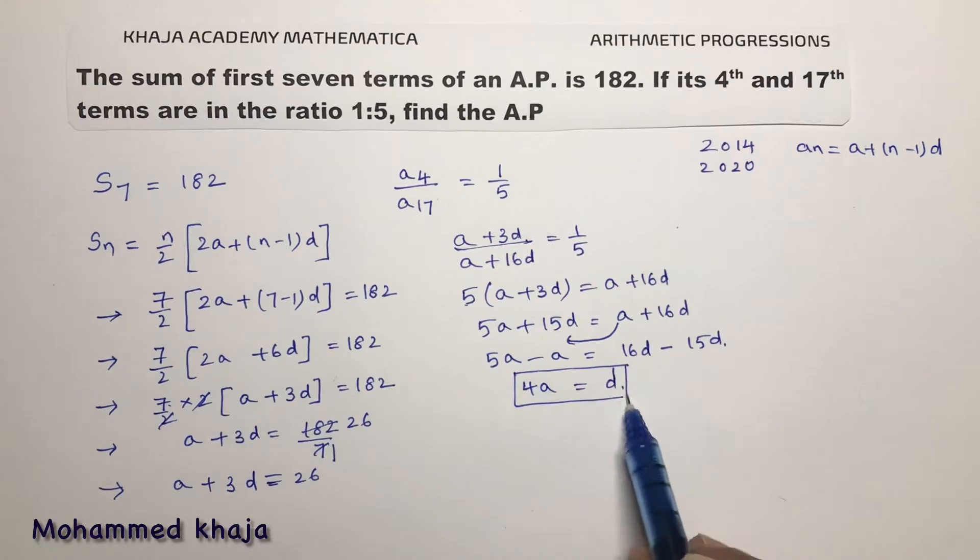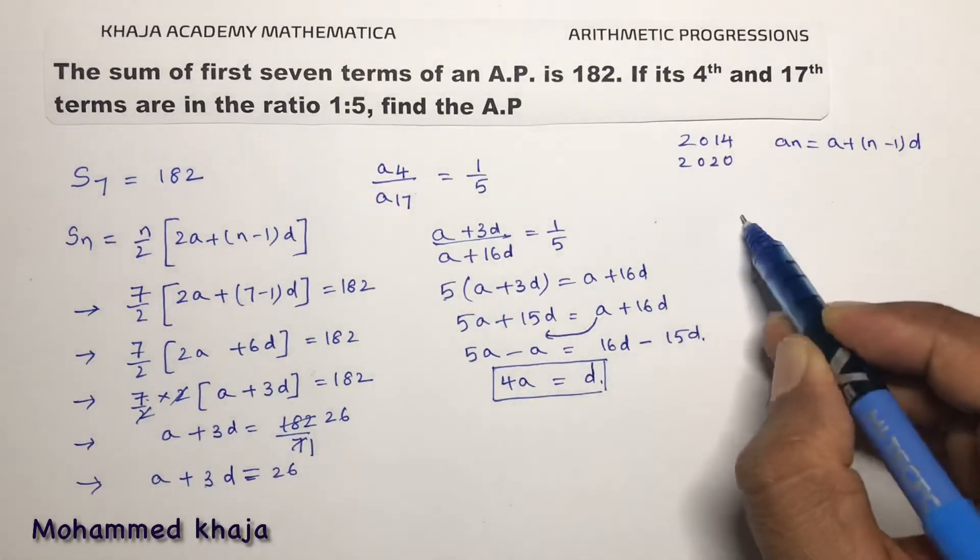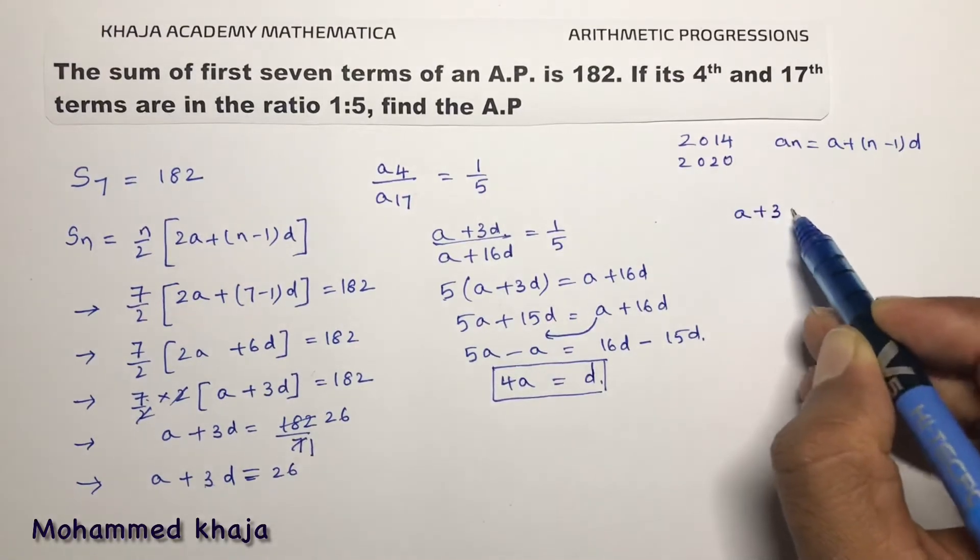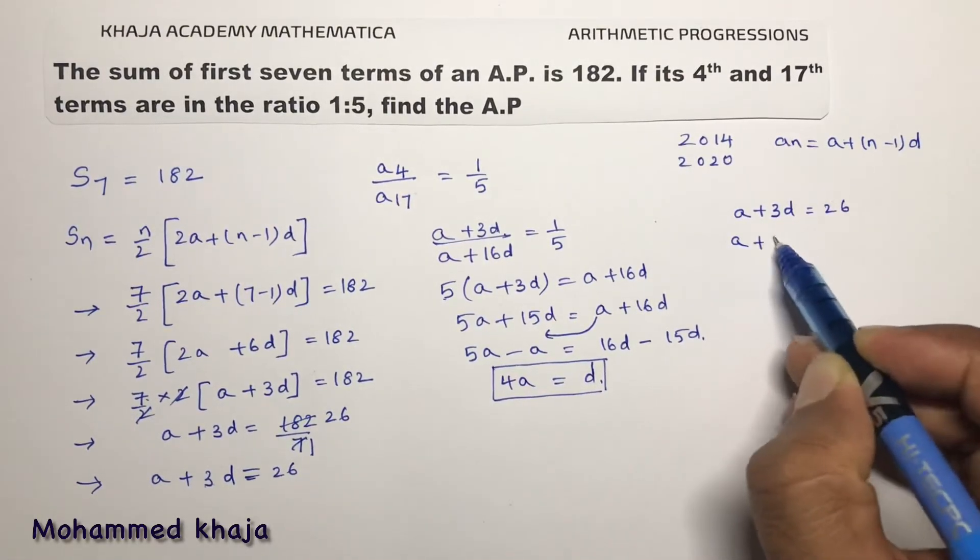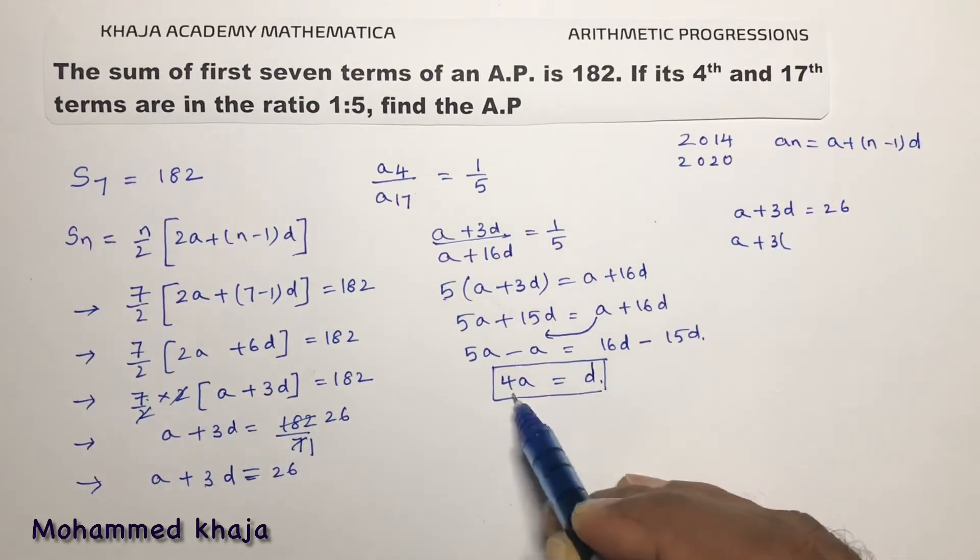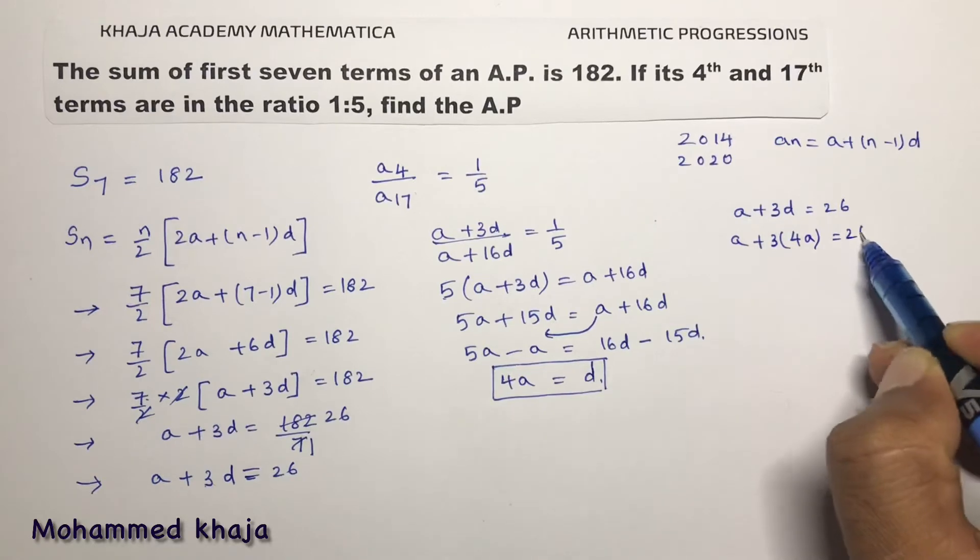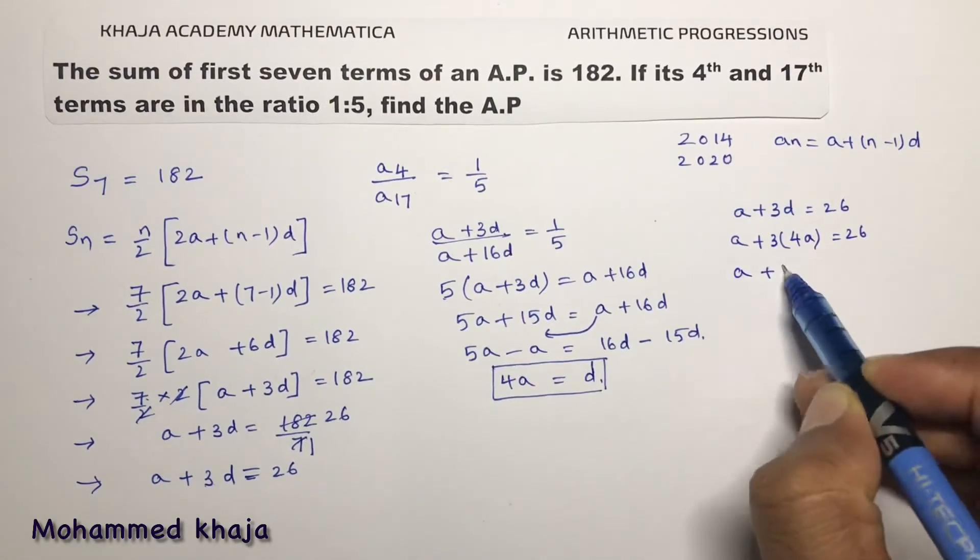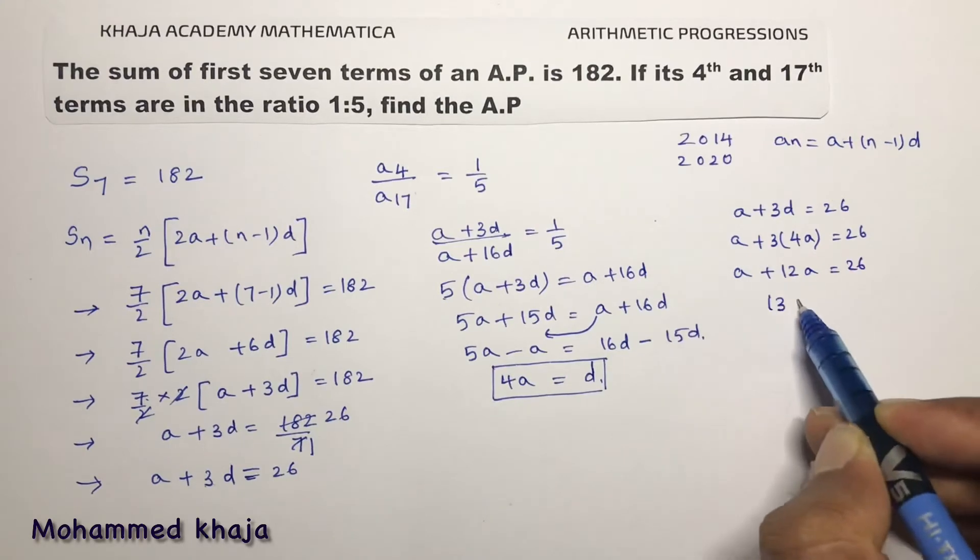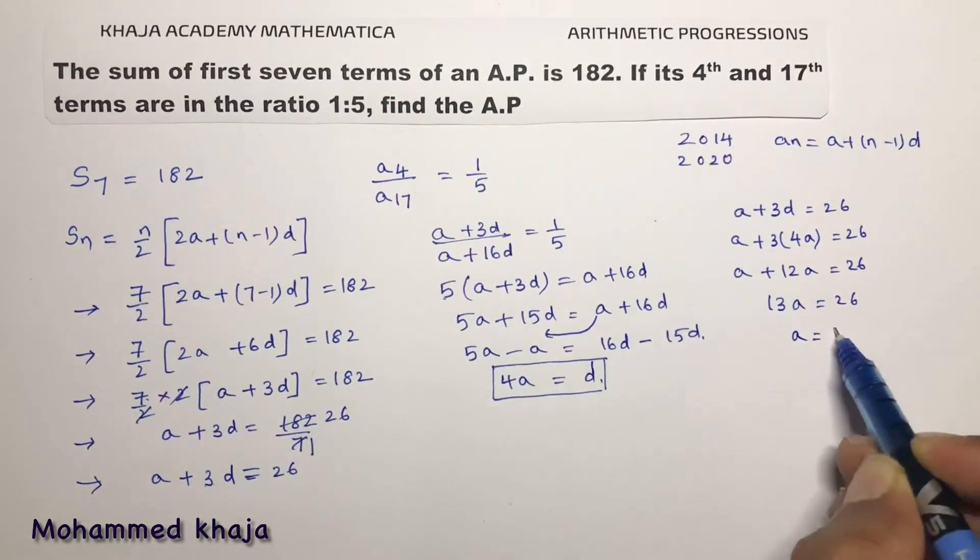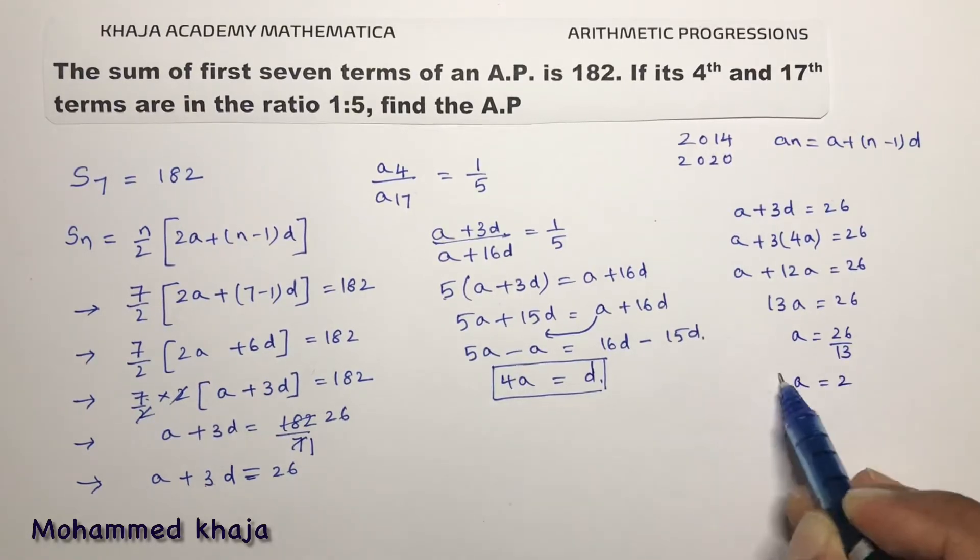4A equals D. Now substitute this value in the equation A plus 3D equals 26. So A plus 3 times D, D value is 4 times A. A plus 3 times 4A, 12A. So total is 13A equals 26. A is 26 by 13. So the value of A is 2.